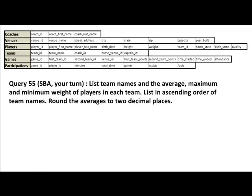Now your turn. List the team names and the average, maximum, and minimum weight of players in each team. List in ascending order of team names, rounded to two decimal places. So before you get confused, just look at the query and see what it's asking for. Look at the pattern. Visualize the output — not with actual details but the structure. We're saying give us the team names, and for every team, give me the average, maximum, and minimum weight.